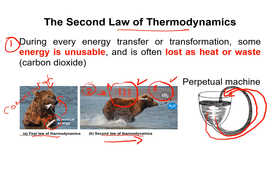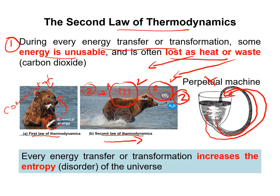To recap: first, during every energy transfer or transformation, some energy is unusable and is often lost as heat or waste such as CO₂. Second, perpetual machines are not real. Third, as you will study in more detail in physics, every energy transfer or transformation increases the entropy of the universe.